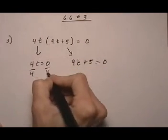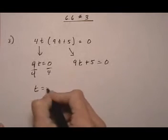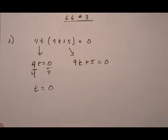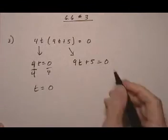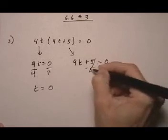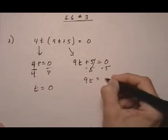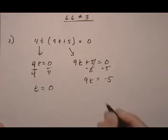So let's solve the first one, dividing by 4. Well, that doesn't change anything. It just gives us t is 0. And the next one, if we take away 5, we get 9t equals minus 5. Divide by 9.